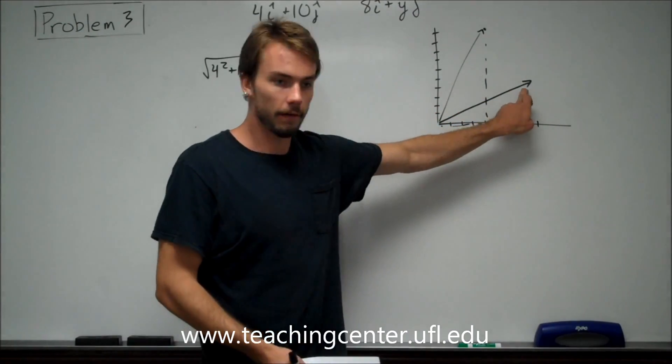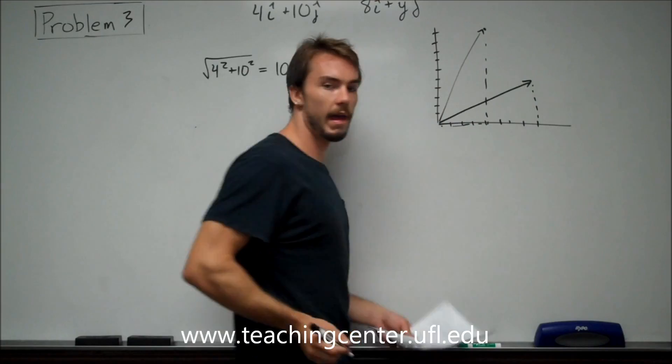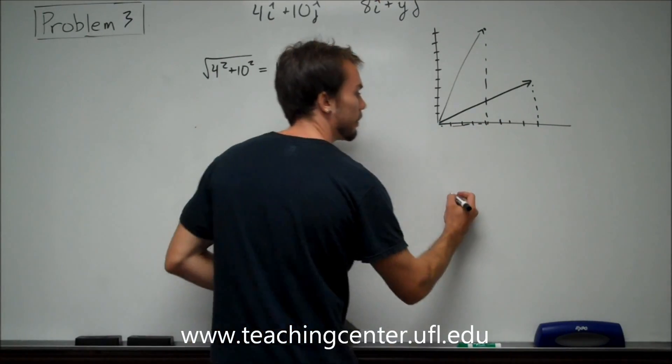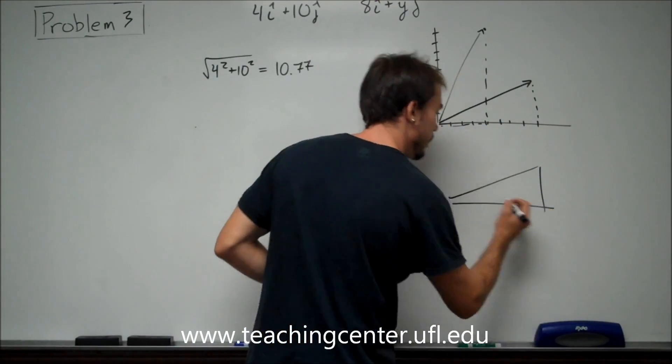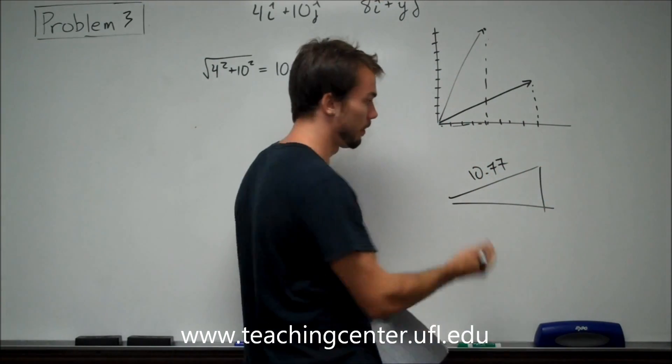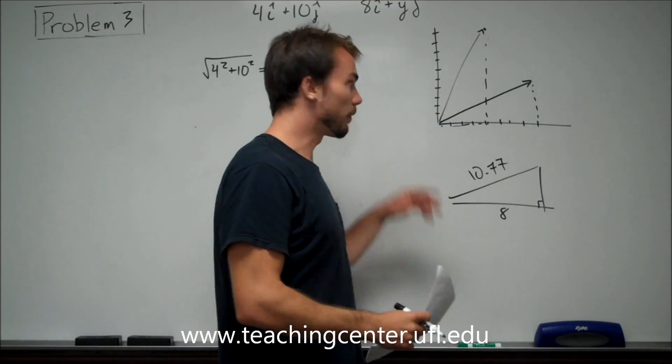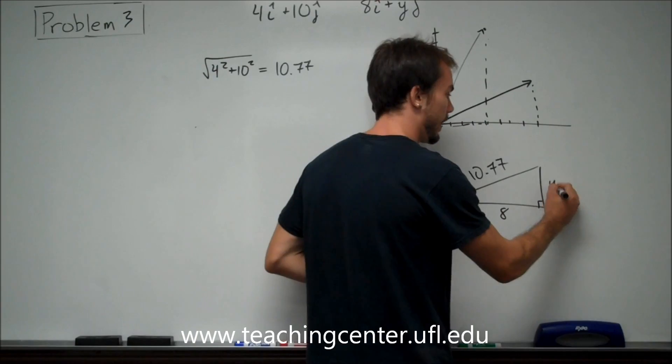Now, this guy right here is another right triangle. This time, the bottom is 8. We don't know what this is. So I'm going to redraw that down here. We know this side has to be 10.77 because it's the same vector. We know this side of the triangle is 8 because they told us the original X component is doubled. What we're looking for is Y.